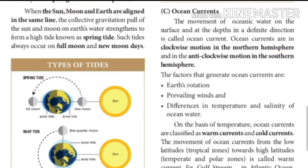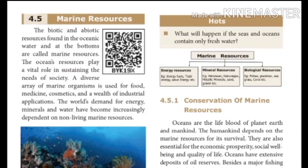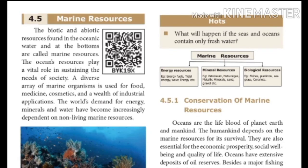The movement of ocean water on the surface and at depth in a definite direction is called an ocean current. Ocean currents move in a clockwise motion in the northern hemisphere and in an anti-clockwise motion in the southern hemisphere. The factors that generate ocean currents are earth's rotation, prevailing wind, and differences in temperature and salinity of ocean water. On the basis of temperature, ocean currents are classified as warm currents and cold currents.